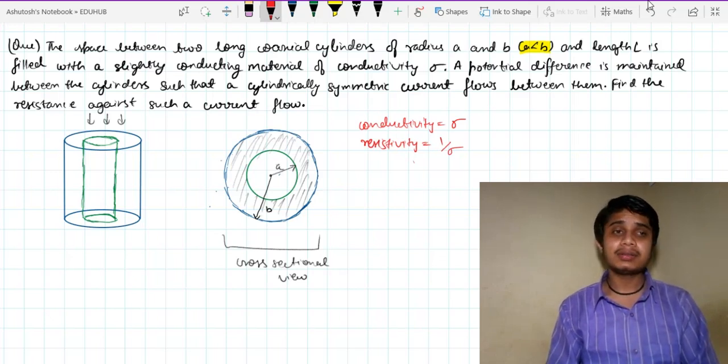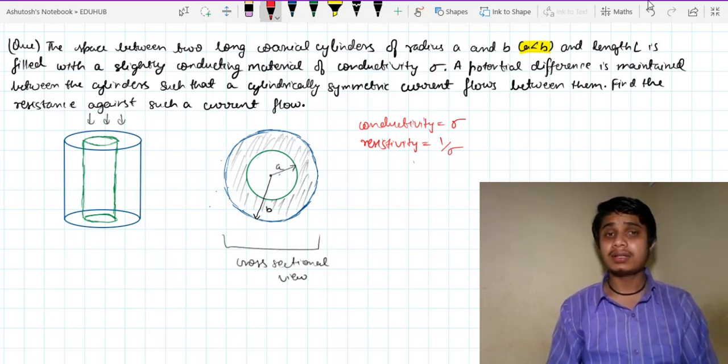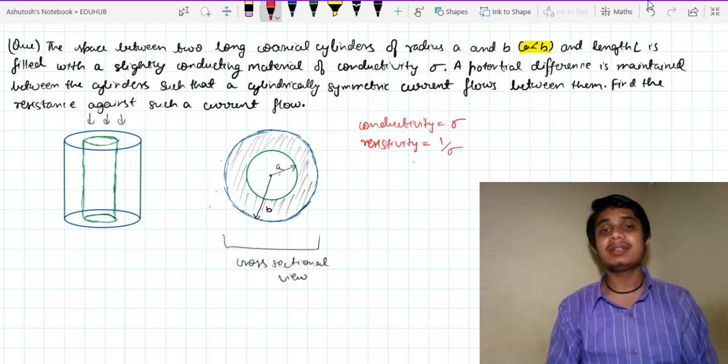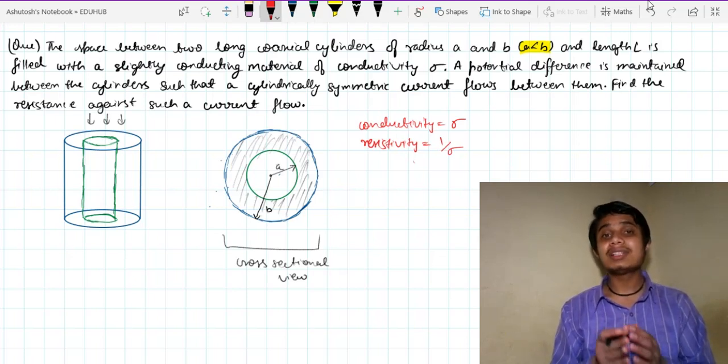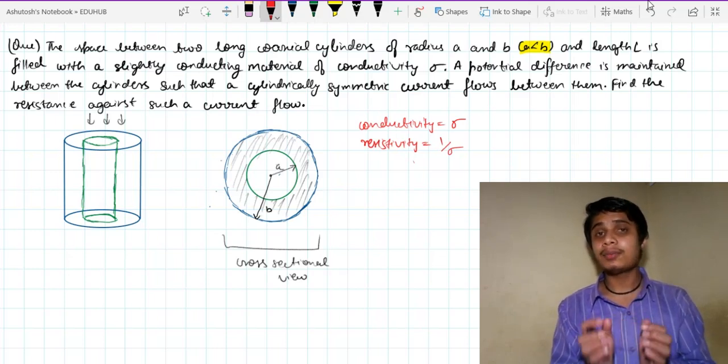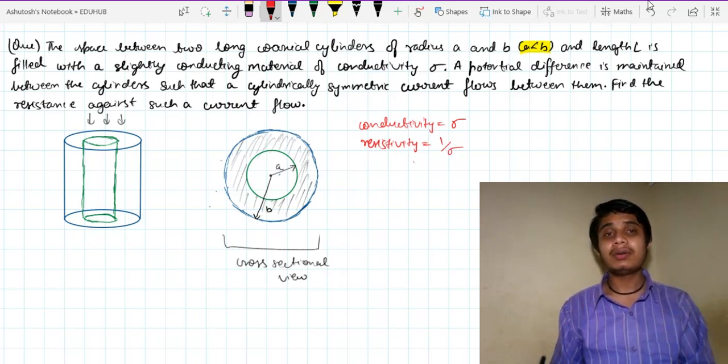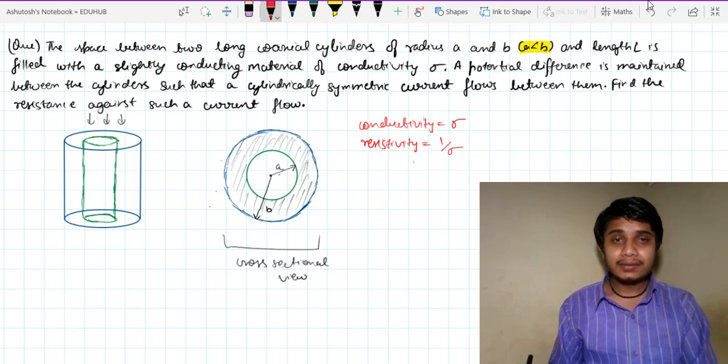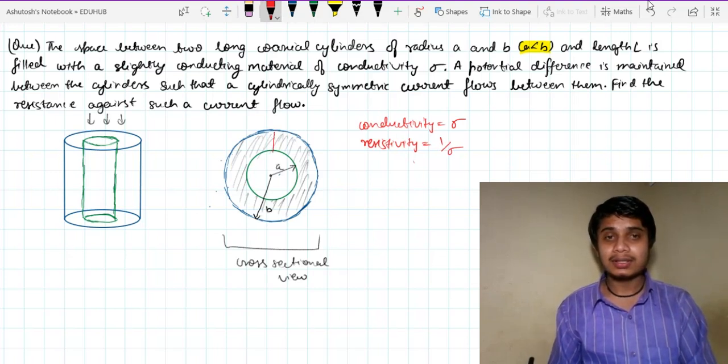Now a potential difference is maintained between the cylinders such that a cylindrically symmetric current. Now what is cylindrically symmetric current? It is a current that radiates from the inner cylinder to the outer cylinder, that is a current which is symmetrical about the inner cylinder. So this is the current that flows.